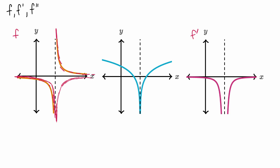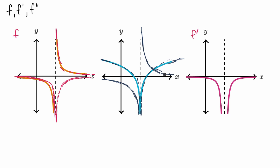Now let's look at this middle graph. What would its derivative look like? Over here the slope is slightly negative, and then it becomes more and more and more negative. So the derivative would be slightly negative but then get more and more negative as we approach that vertical asymptote. On the right side of the vertical asymptote, the derivative is very positive here, and then it gets less and less positive — the slope might be asymptoting towards zero.